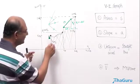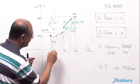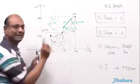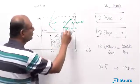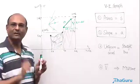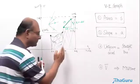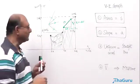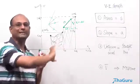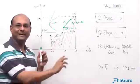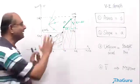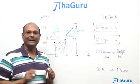The area under the VT graph tells you the displacement. From here to there, this area is the displacement in the first one second. This area would be the displacement from three to four seconds. And if you took the entire region, the total area gives the total displacement over the full two seconds. This is a very useful property of the VT graph.